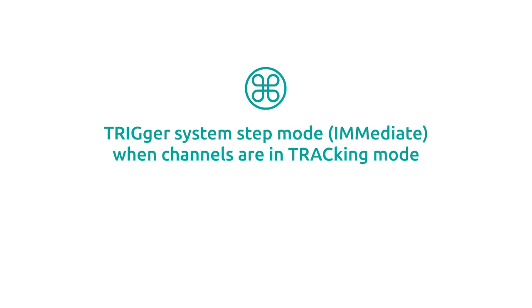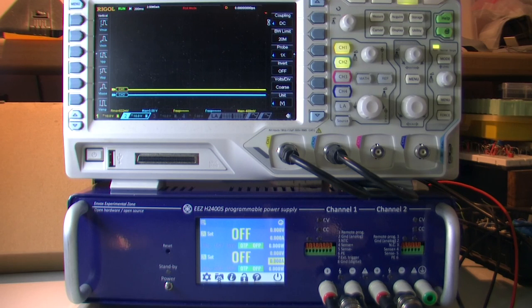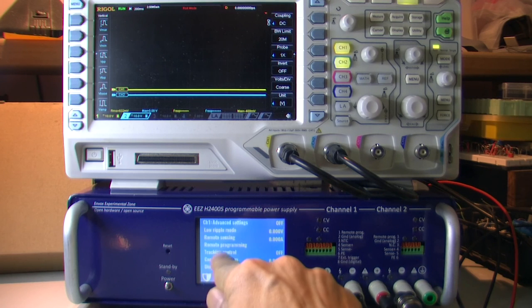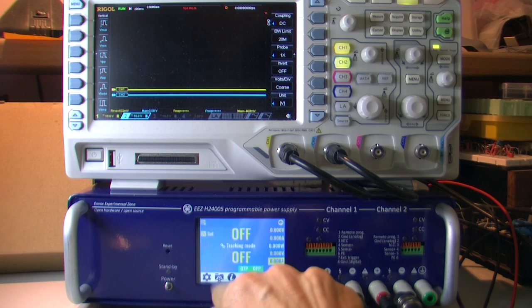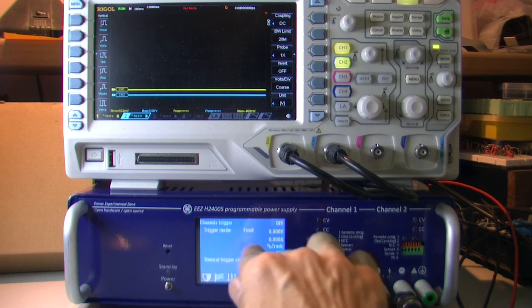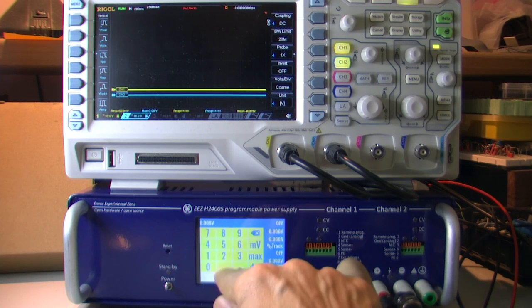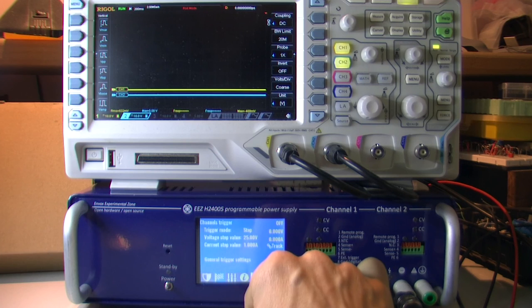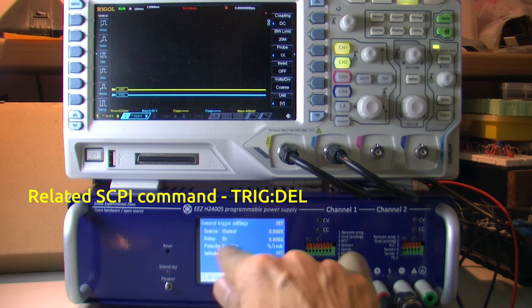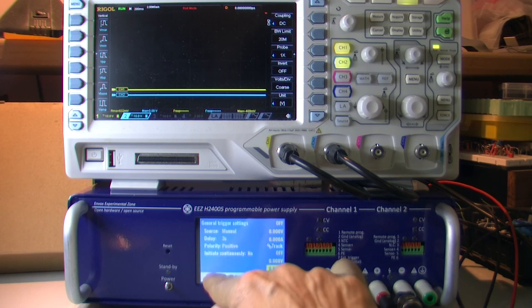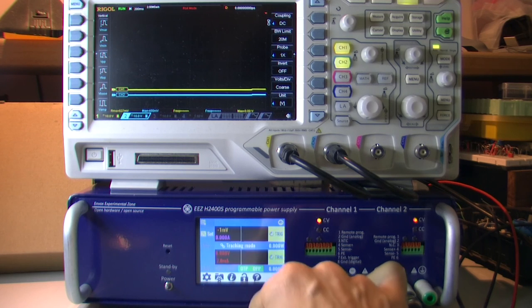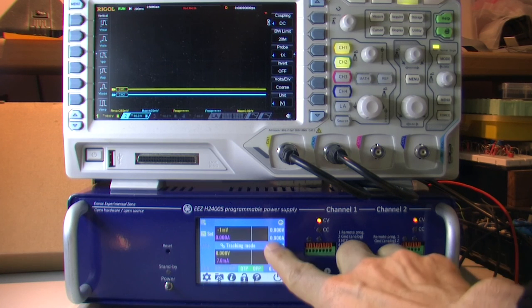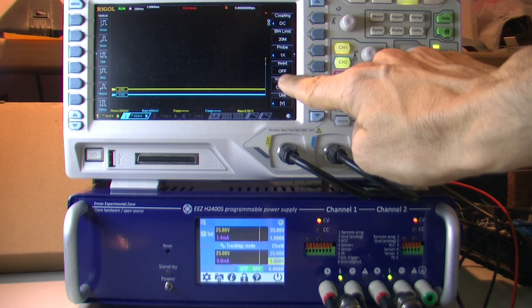We can also use trigger when channels are in the tracking mode. That means that both channels are now controlled from one place. Step a new value could be like this for voltage or one for current. We can now even use delay, like three seconds to see what will happen. And when initiated trigger, click, and after three seconds we'll get something here.